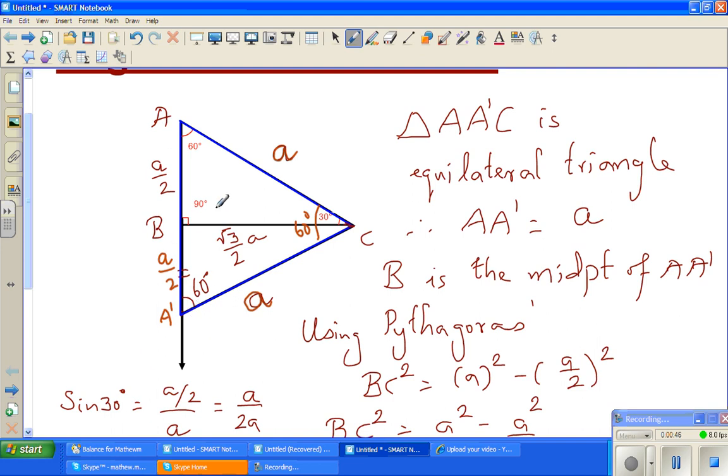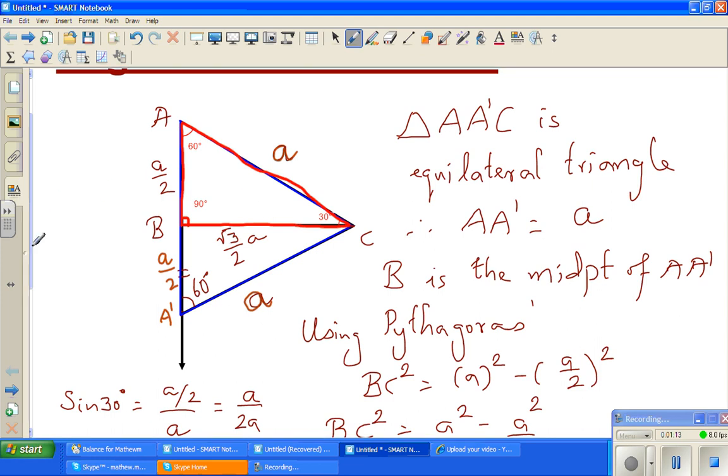Now sin 30 is, so then we were looking at only triangle ABC, we are looking at this triangle ABC. Focus is ABC, B is the right angle. This AB is a half of A by 2, this is A and this is root 3 by 2.